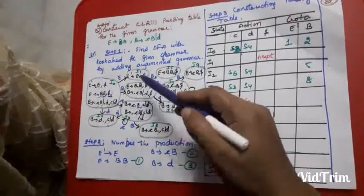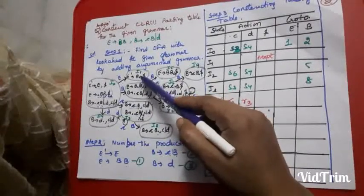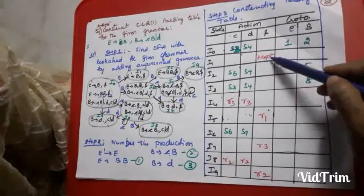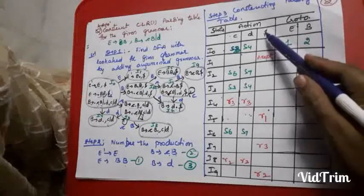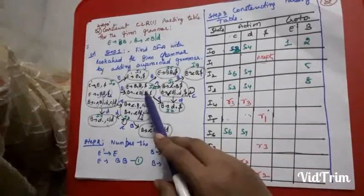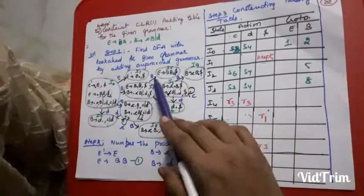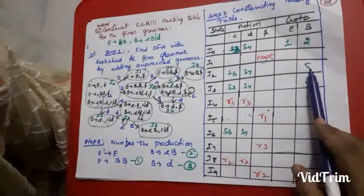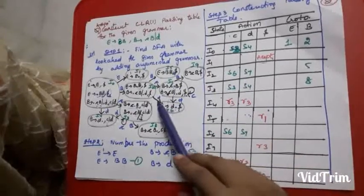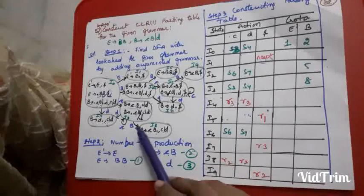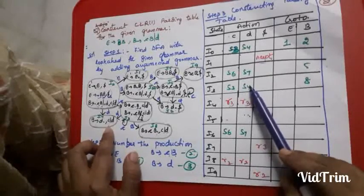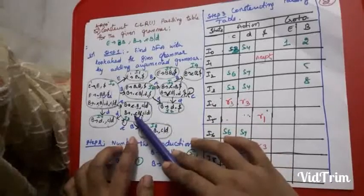For state I1, E' produces E dot is the start symbol completely read, so under dollar we write accept. For I2: B goes to I5 (written as 5 in go-to), C goes to S6, D goes to S7. For I3: B goes to I8 (written as 8), C goes to S3 (same state, loop), D goes to S4.